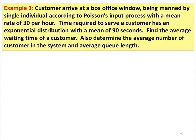Example number 3. Customers arrive at a box office window being manned by a single individual according to a Poisson input process with a mean rate of 30 per hour. The time required to serve a customer has an exponential distribution with a mean of 90 seconds. Find the average waiting time of a customer, the average number of customers in the system, and average queue length.